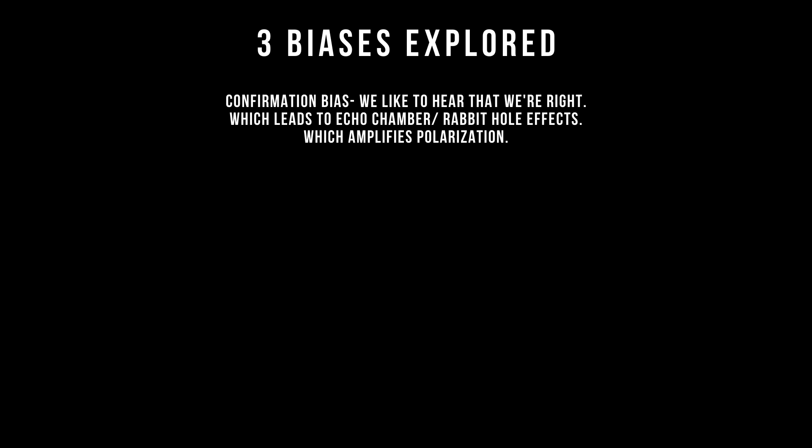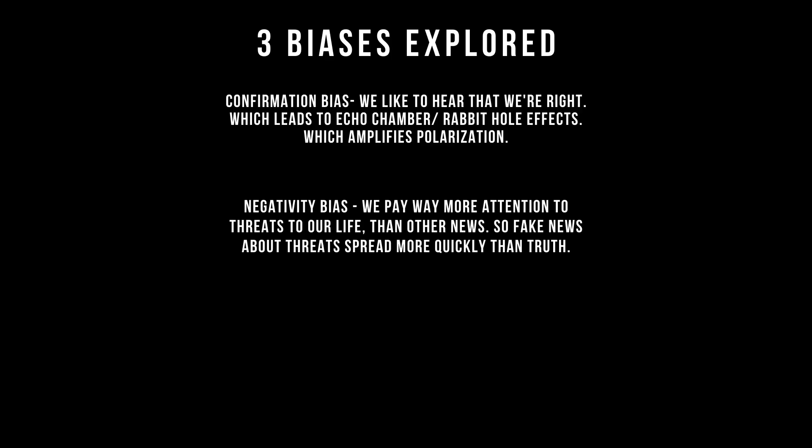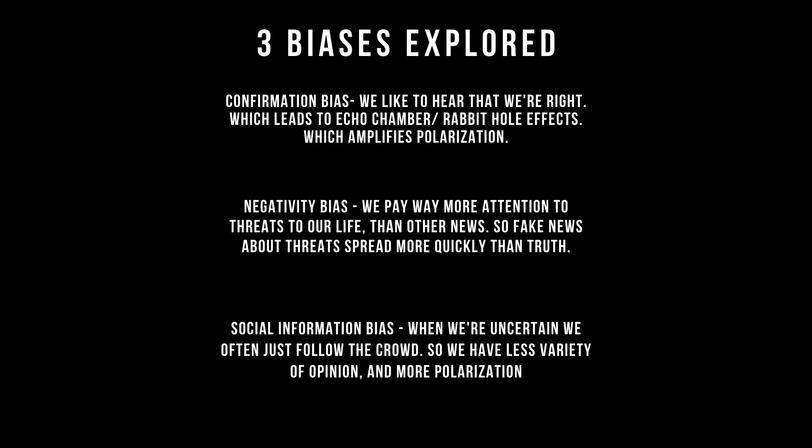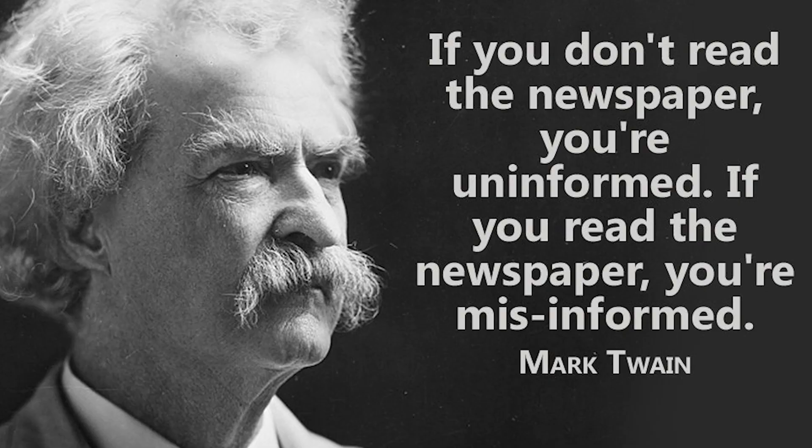I hope I've given you some good food for thought. Here's a quick summary of the three biases we explored. First, confirmation bias: we like to hear that we're right, which leads to echo chamber and rabbit hole effects on social media, very rapidly leading to amplified polarization. Second, negativity bias: we pay more attention to threats on our life than any other kind of information, which means fake news creators — not shackled by the weight of truth — are free to make whatever ludicrous, sensationalist claims about threats they want. And finally, our heightened sensitivity to social information: when we're uncertain, we tend to follow the crowd, and social media has made this easier than ever, leading to less executive control over our opinions and more polarization in society. I'll leave you with this quote from Mark Twain: if you don't read the newspaper, you're uninformed; if you do read the newspaper, you're misinformed. Thank you for watching.